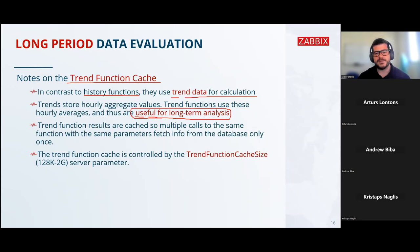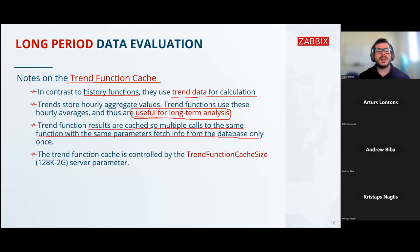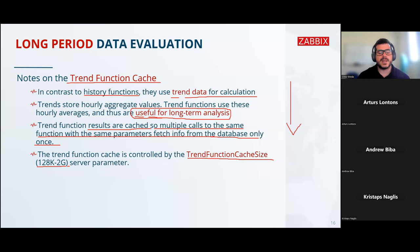If you are going to perform any kind of long-term analysis, make sure you use trend functions — it's the best thing you can do for your system's performance, your Zabbix, and your database. Trend function results are cached, so multiple calls to the same function with the same parameters fetch info from the database only once — the database load goes way down. This cache is controlled by the TrendFunctionCacheSize parameter, which has a range from 128 kilobytes up to 2 gigabytes in the Zabbix server configuration file.